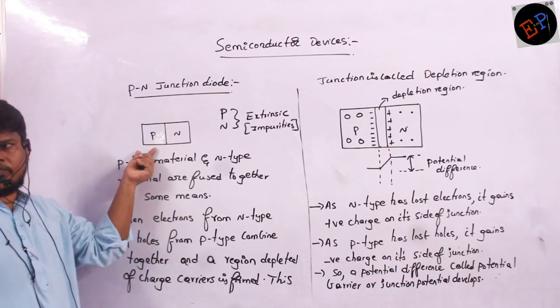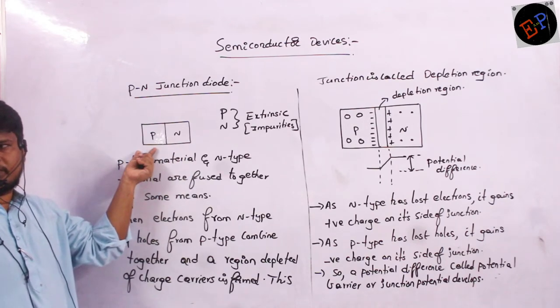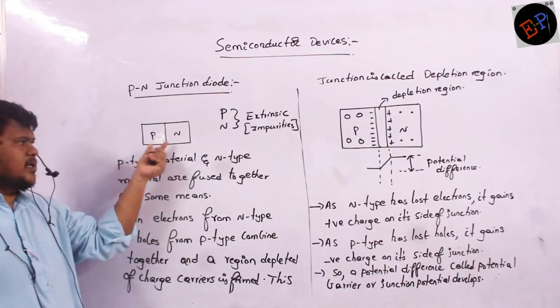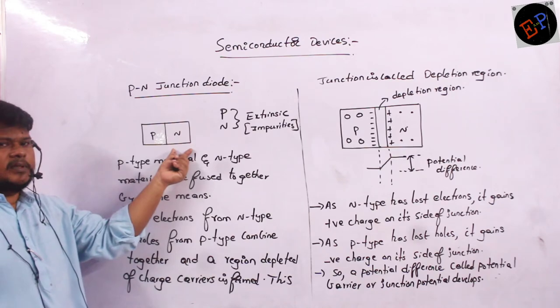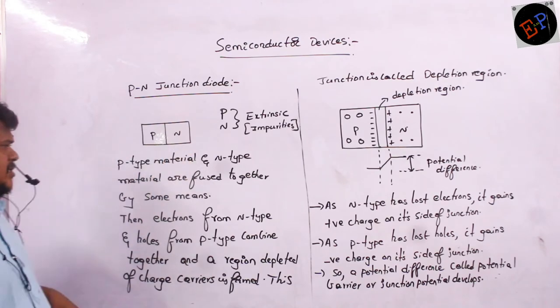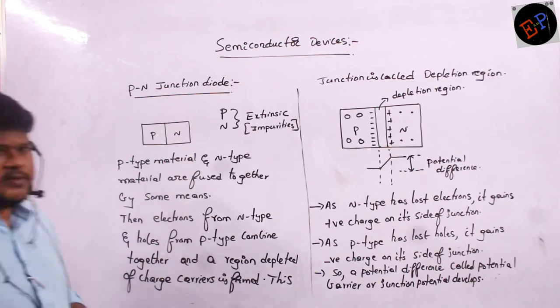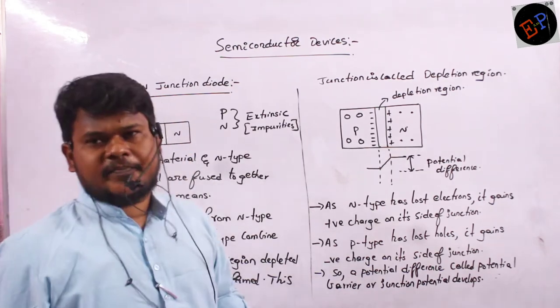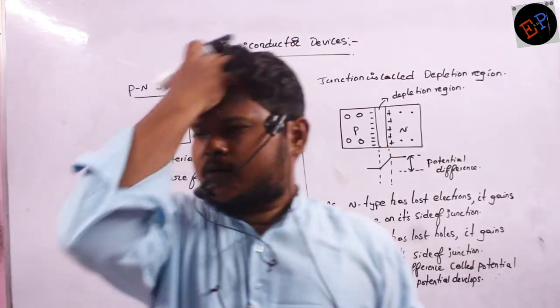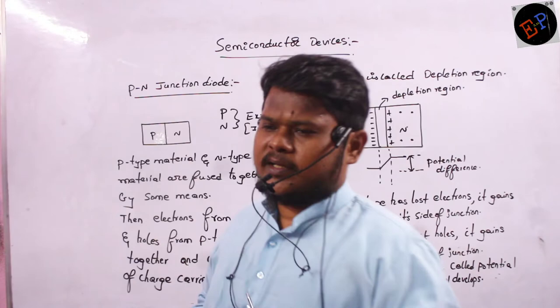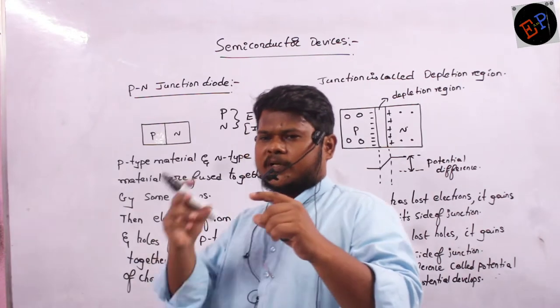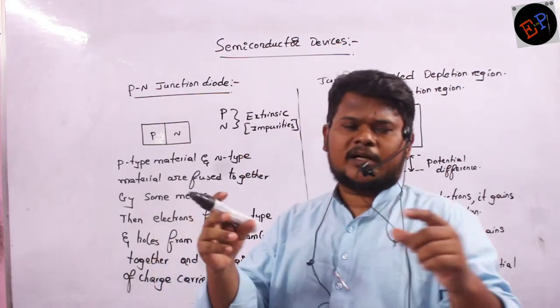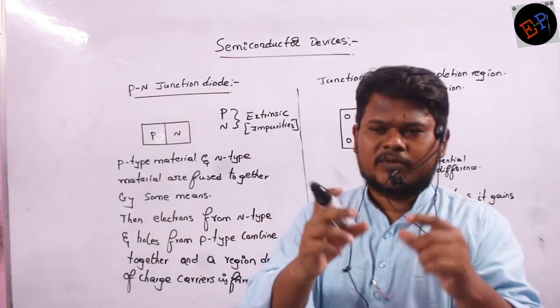So in P-type, who are the majority charge carriers? Holes. N-type? Electrons are the majority charge carriers. So what I do is, I take this P-type and N-type and I will fuse them together.